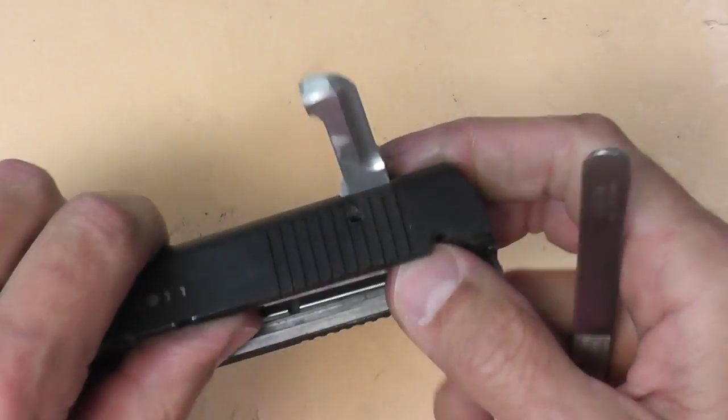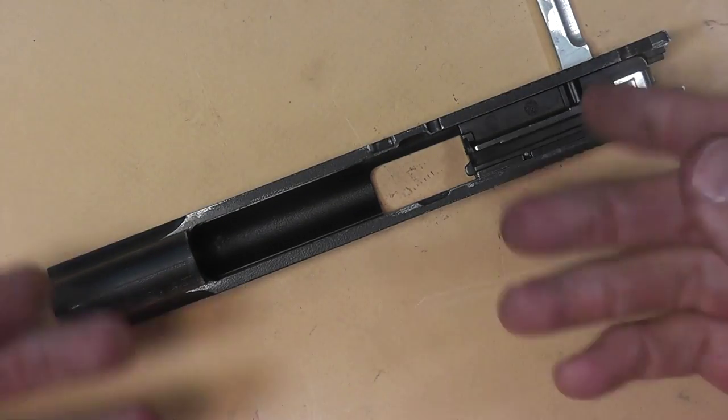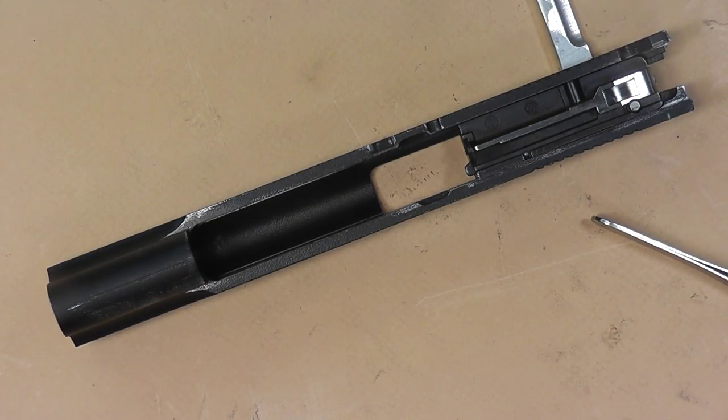So now you can put the gun back together after you hammer that pin in and assuming you cleaned everything. I didn't, I just took it apart. And there you have it. So that's taking apart the slide on the GSG.